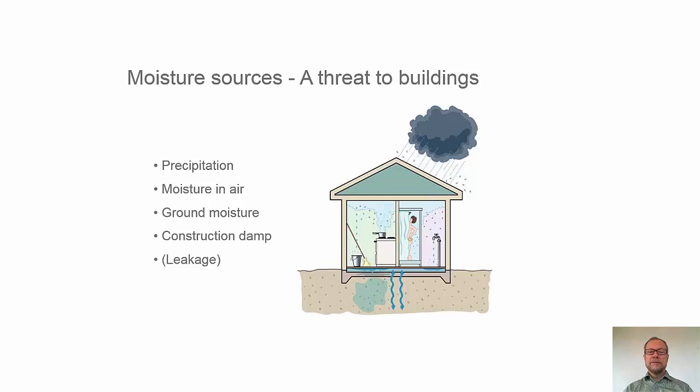Moisture source is really something you have to consider. It's a threat to the building, and they always have to be accounted for. And we have precipitation: regular rain, snows, hail. It can come directly vertically down to the building or from the side. We'll talk more about that later.